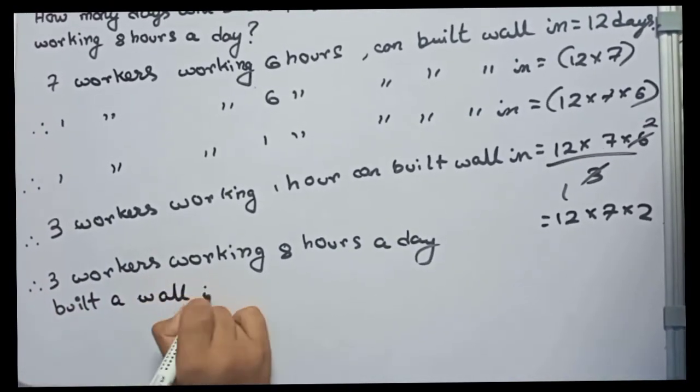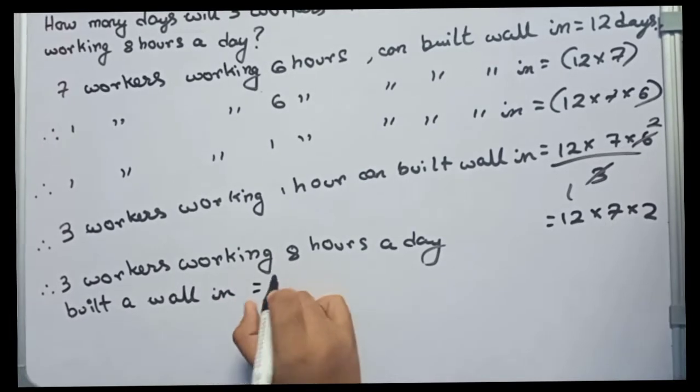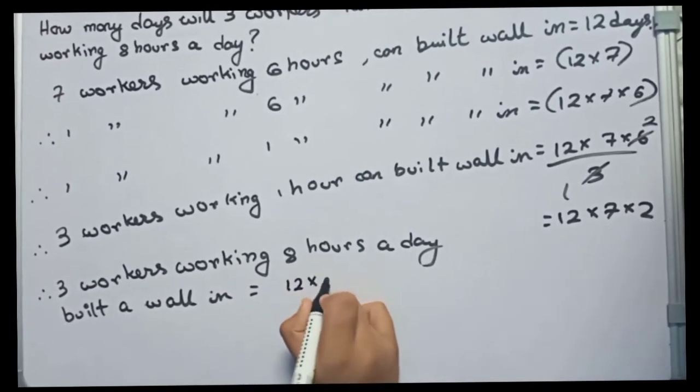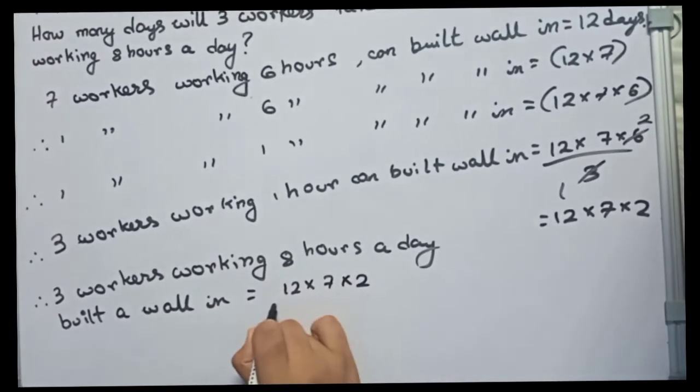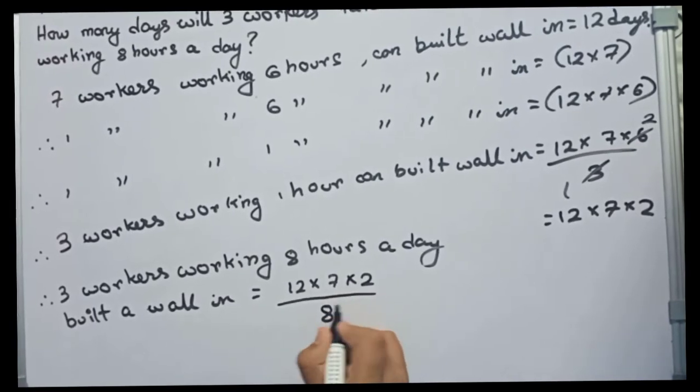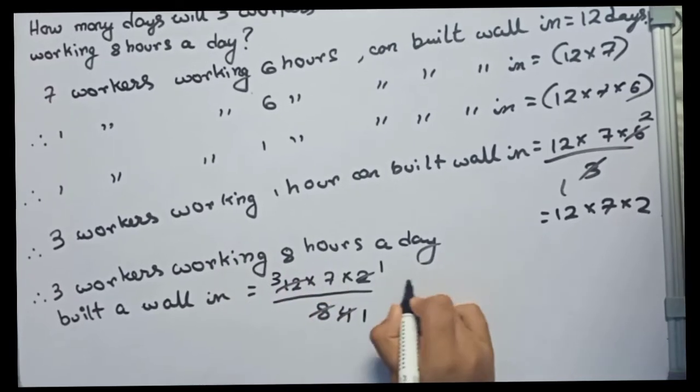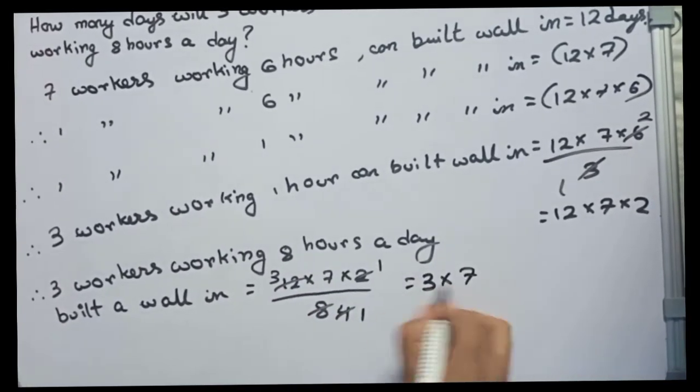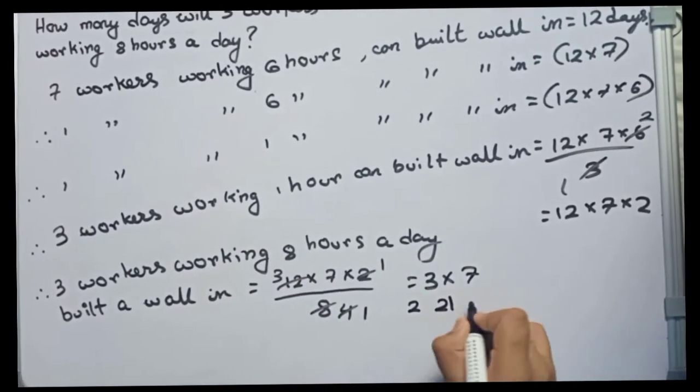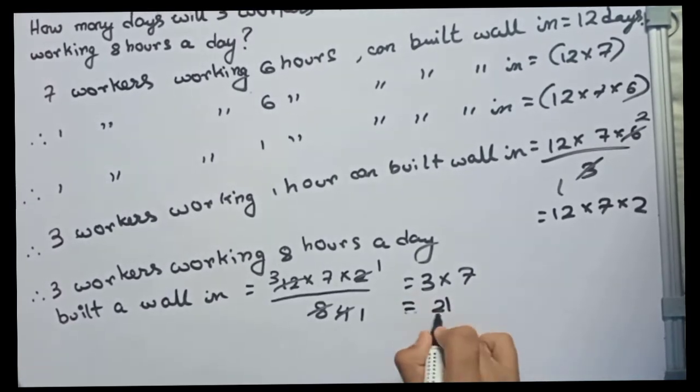We put 12 into 7 into 2 by 8. We cut 2, 1, 4, 1, 3 becomes 3 into 7, which means 21 days. So this is our final answer.